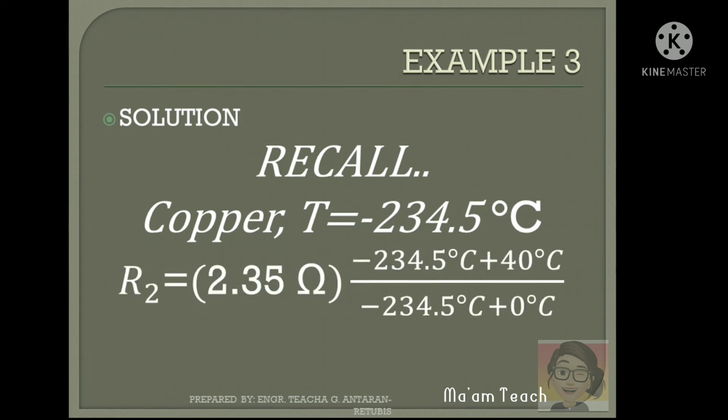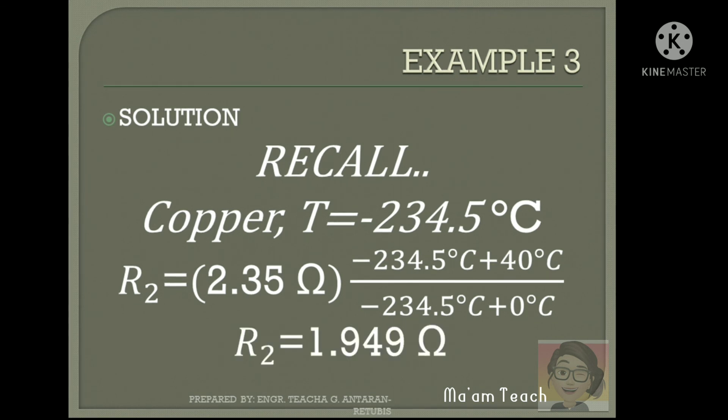If you substitute there, we'll have this value. Therefore, the value of the resistance at 40 degrees Celsius is positive 1.949 ohms.